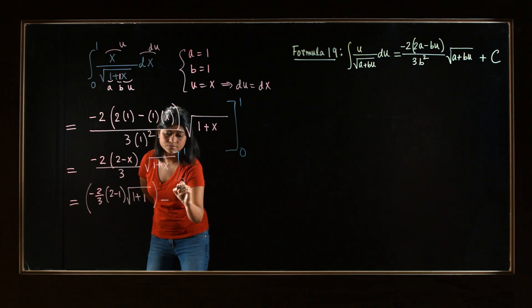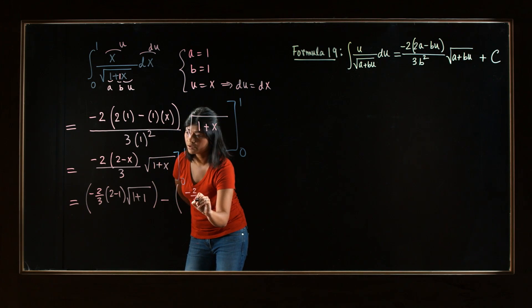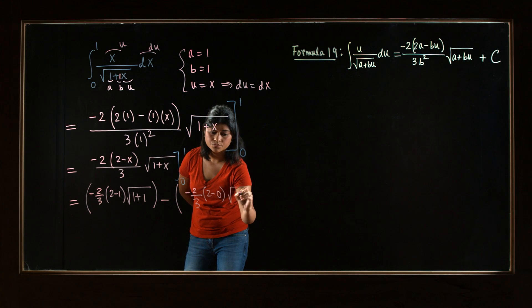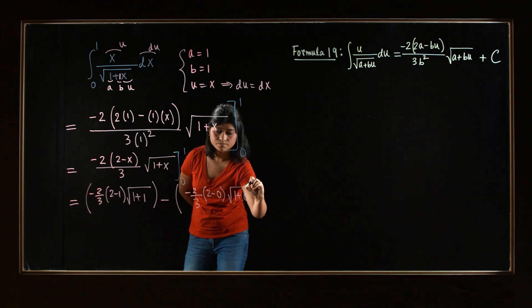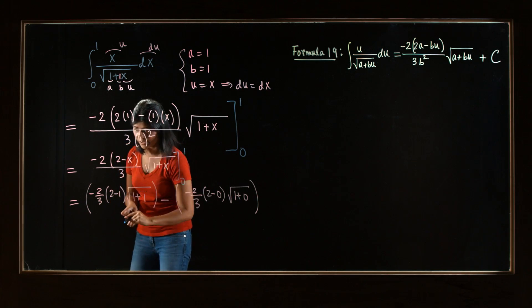And then, subtract by plugging in 0 for x. So negative 2 3rd times 2 minus 0, square root 1 plus 0. So let's try to simplify a little bit.